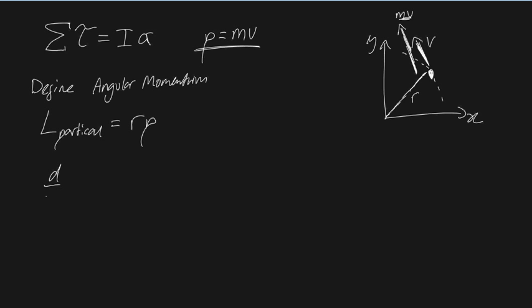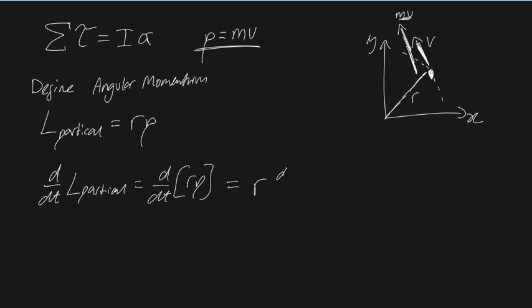Out of pure interest, let's say we wanted to differentiate our angular momentum of our particle with respect to time. Well, we know that it's just going to be d/dt of rp. We know that because our radius is constant — because it's traveling around in a circle — we can write that as r times d/dt of our momentum p.